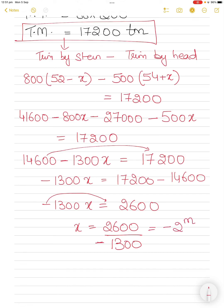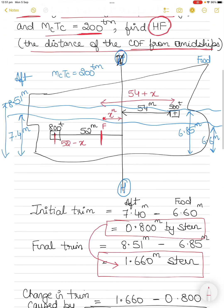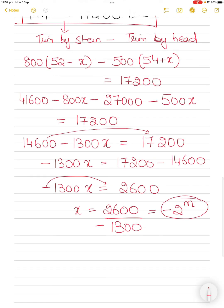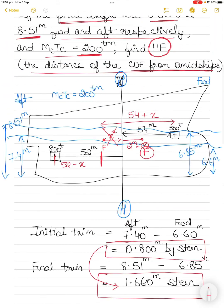Solving: x = 2,600 ÷ (−1,300) = −2 meters. So x = −2 meters aft of midships, which cannot be correct — a distance cannot be negative. This means our assumption was wrong. x is actually 2 meters, but it is 2 meters forward of midships.